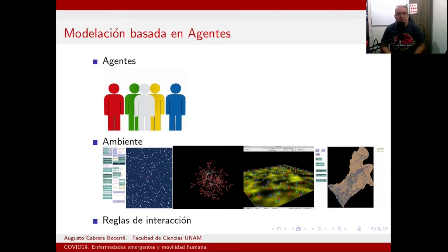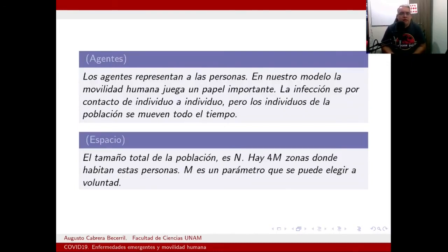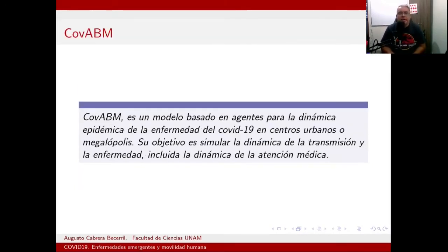El COV-ABM es un modelo basado en agentes para la dinámica epidémica de esta enfermedad, pensando en centros urbanos y megalópolis. Su objetivo es simular la dinámica de transmisión y la dinámica de la enfermedad, incluyendo en cierta medida la dinámica de la atención médica. En este paso todavía no estamos incluyendo esquemas de vacunación ni la coexistencia de distintas variantes del virus, que son hechos más recientes a introducir en una versión posterior.